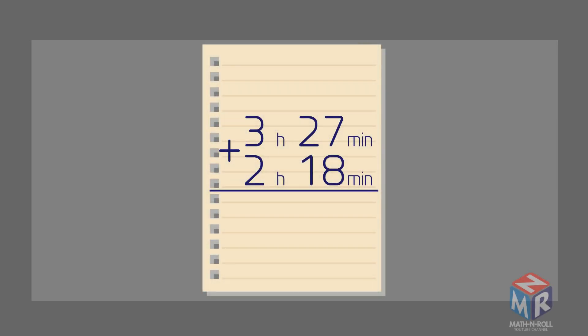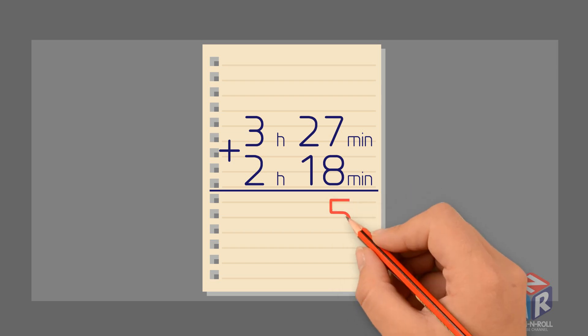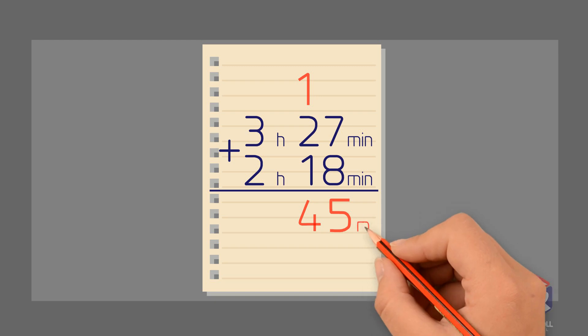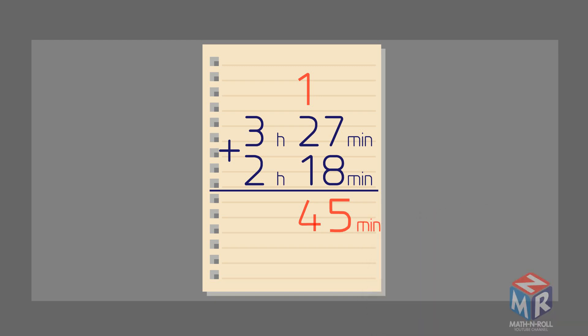First, we need to add these two numbers, 27 plus 18, because the units match. 7 plus 8 equals 15. We are going to write 5, carry over the 1, and then we need to add 1 plus 2 plus 1, which equals 4. So we have 45 minutes.